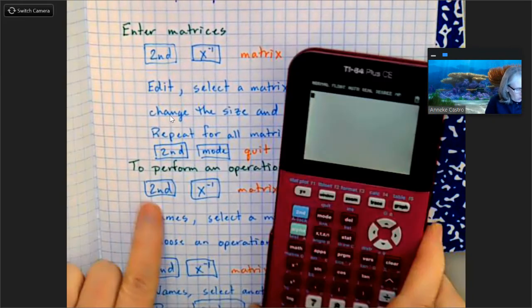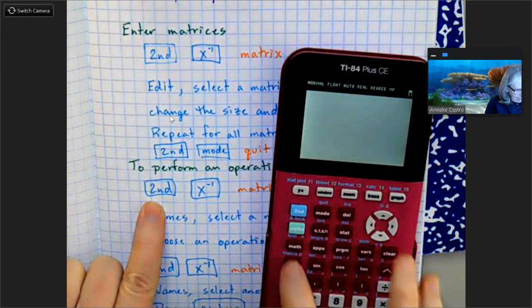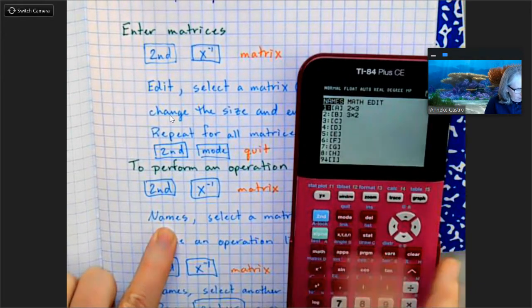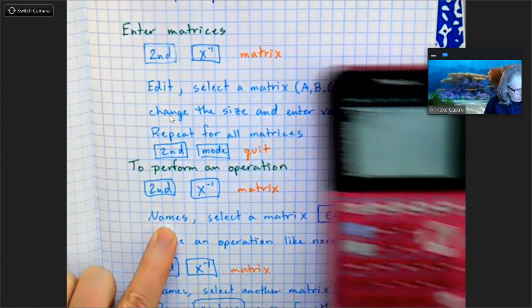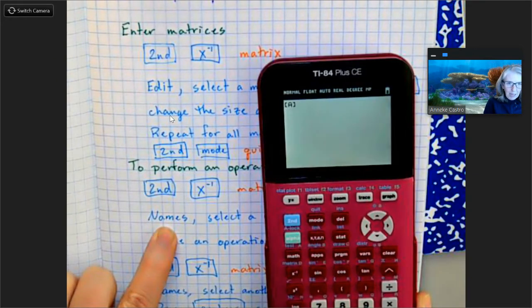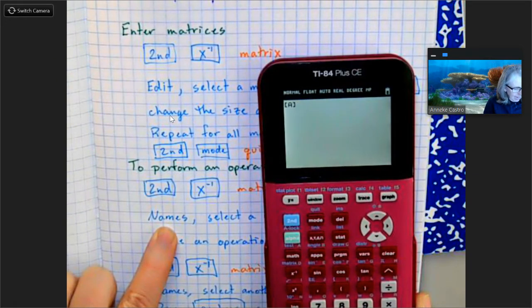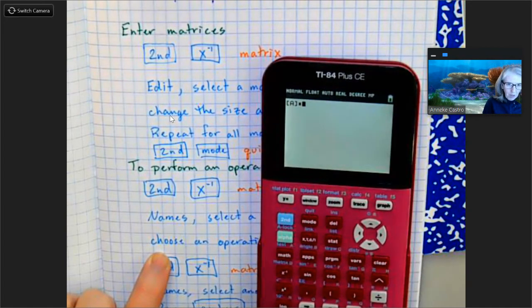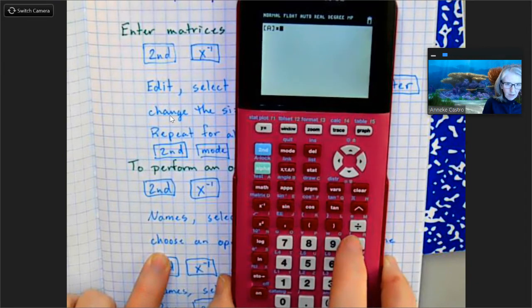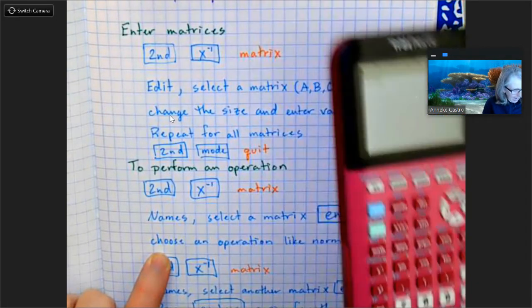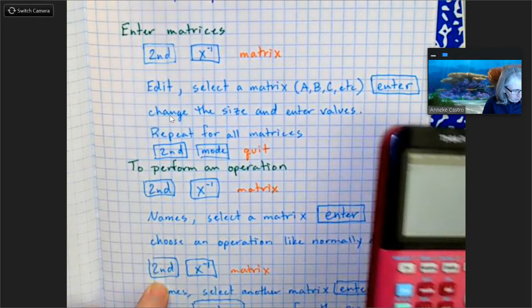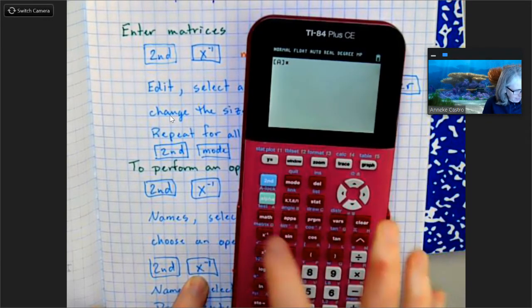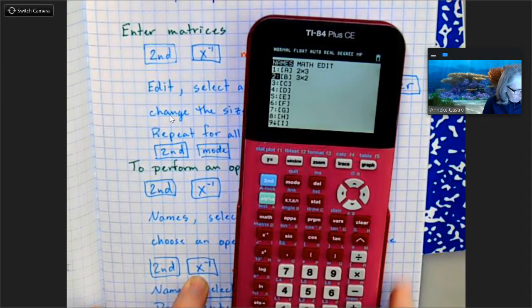Now I'm going to do my operations. So I'm going to do second x^-1 again to get my list of matrices. I'm going to select a matrix, so A looks good, and I'm going to press enter. So now on my main screen you see there's matrix A. Notice the notation. Now I'm going to choose an operation. We're multiplying, so I'm going to hit multiply, just hitting multiply on my calculator. And now I need to put in the next matrix.